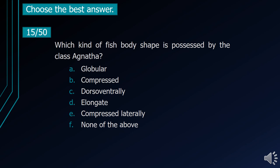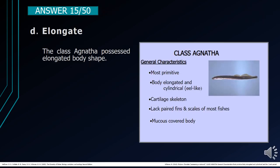Number 15. Which kind of fish body shape is possessed by the class Agnatha? A. Globular. B. Compressed. C. Dorsoventrally flattened. D. Elongate. E. Compressed laterally. F. None of the above. The correct answer is letter D, Elongate. The class Agnatha possesses an elongated body shape.